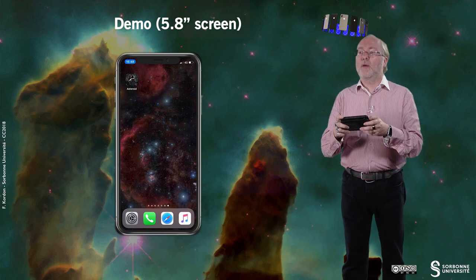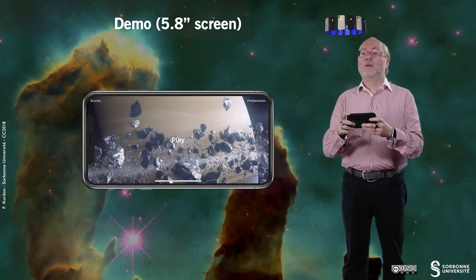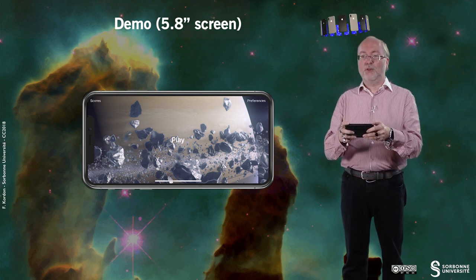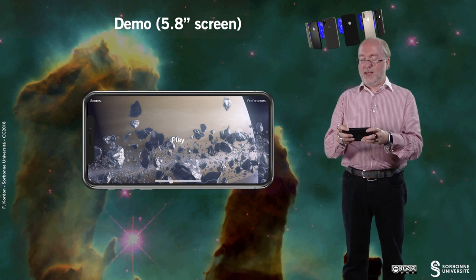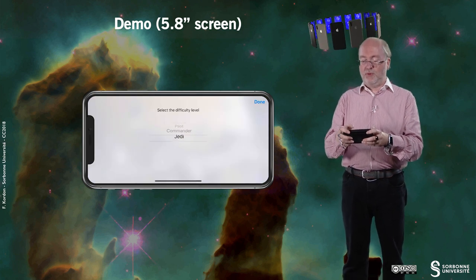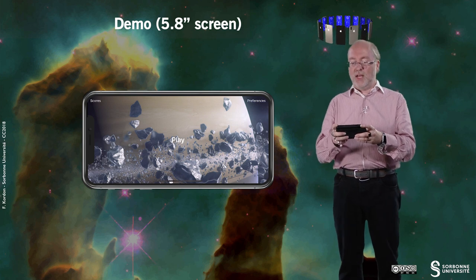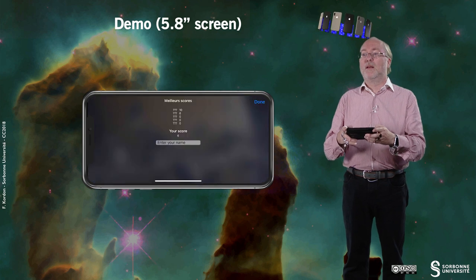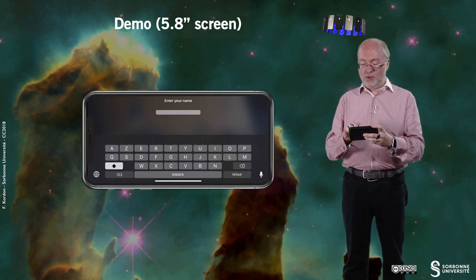Let's have our application running on the large device now. Here I can still have a look at the score. I can still change my preferences. I already played with it, so it's already in Jedi mode. Then I enter my name. I have a better score there.